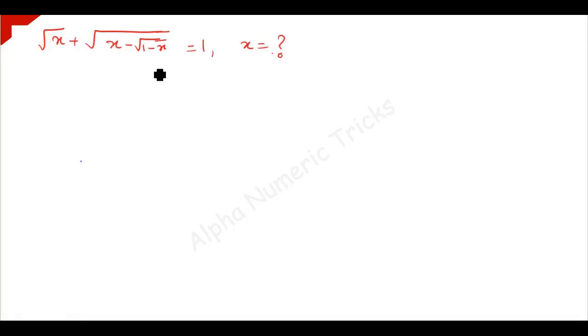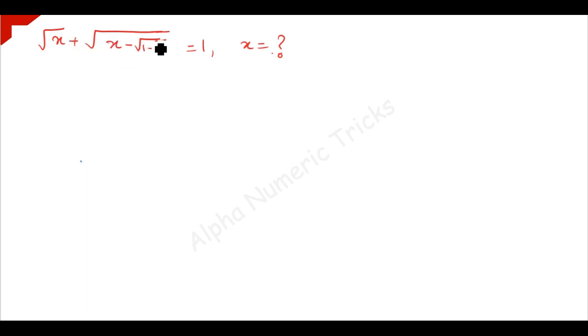Now, we are going to solve this nice radical problem. We have to find the value of x if square root of x plus square root of x minus square root of 1 minus x is equal to 1.